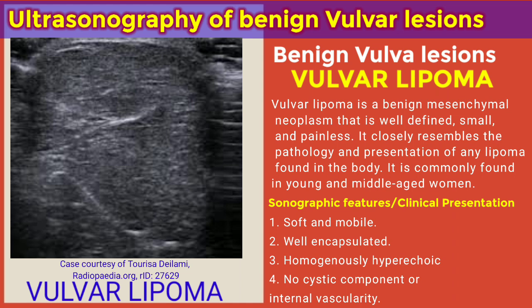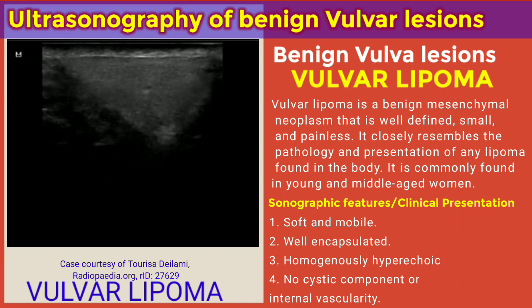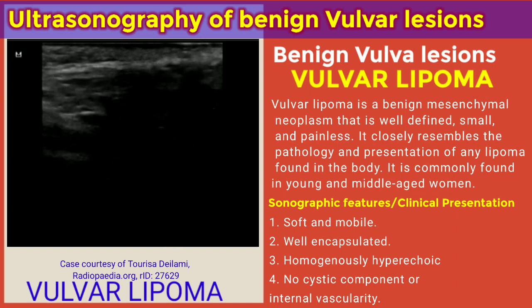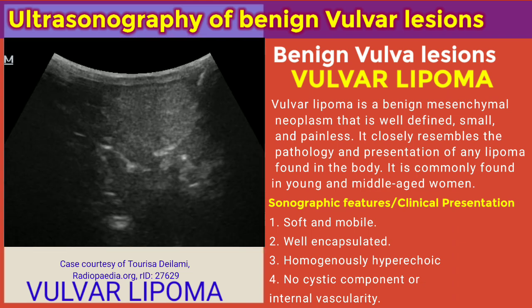The sonographic features include a well-defined, homogeneously hyperechoic mass — as we can see in this video — which may be oval in shape. On color Doppler interrogation, no flow is indicated. When physically examining a woman with vulva lipoma, you will see a vulva bump that is painless, mobile on compression, and very soft on palpation. Sonographic features remain the homogeneously hyperechoic mass without flow on color Doppler interrogation.